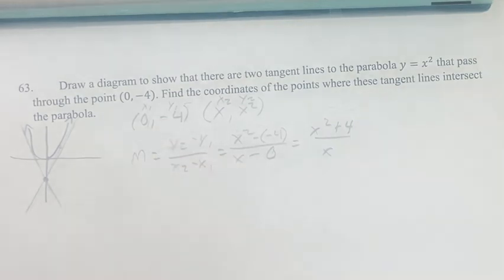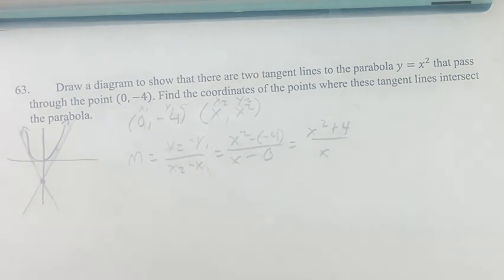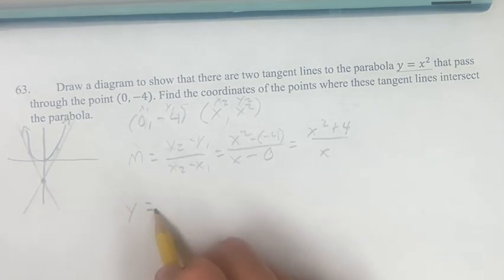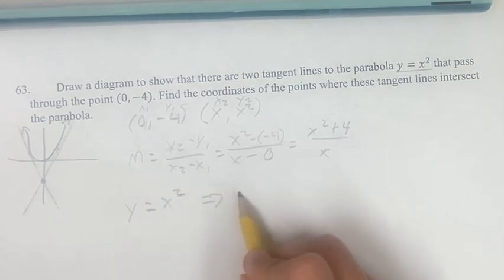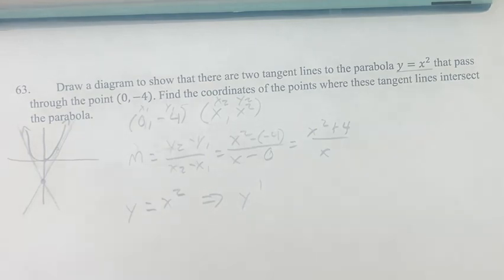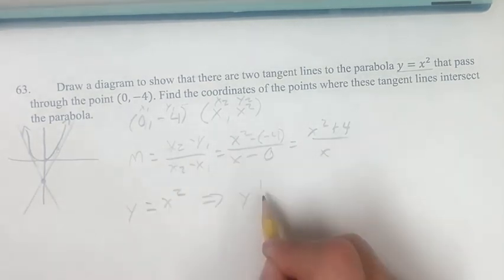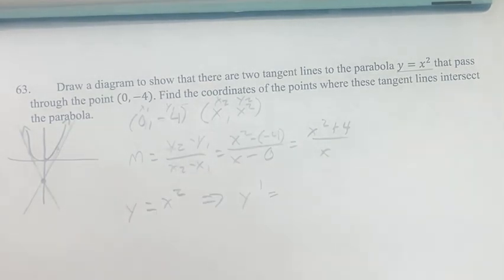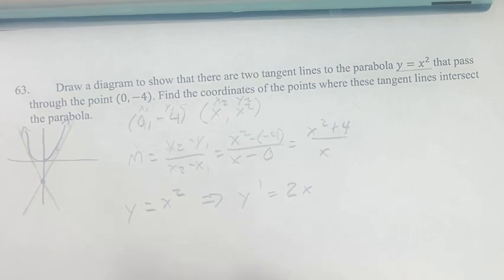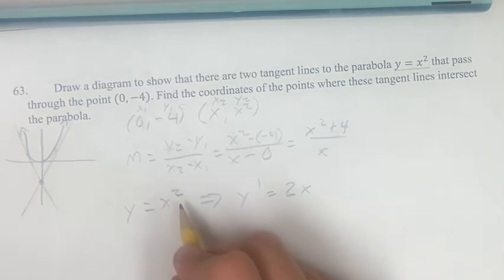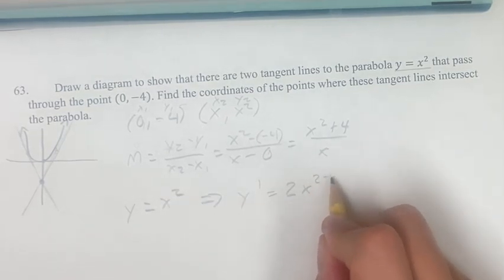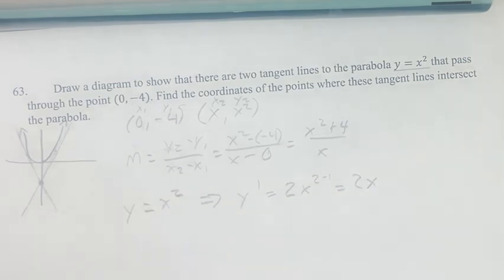Now how else would we find the slope of this line? We know the equation of the parabola. If y equals x squared, the derivative, which is the slope of the tangent line at any point, is calculated by bringing down the exponent times x to its new exponent. So 2x to the first power is just 2x.